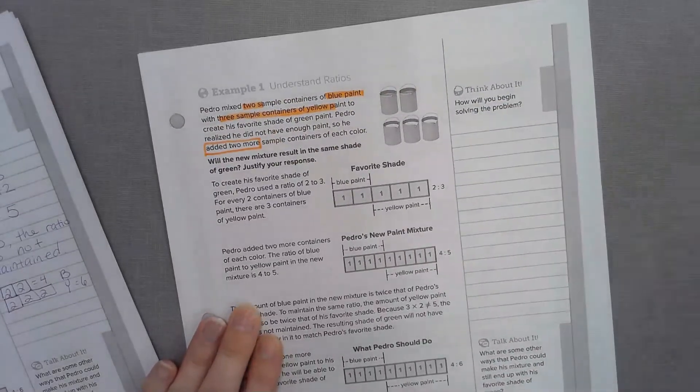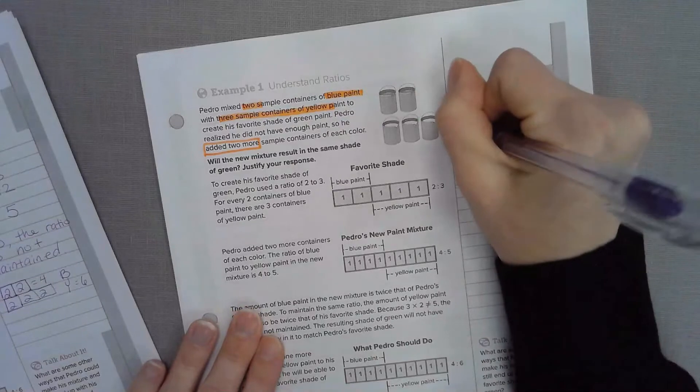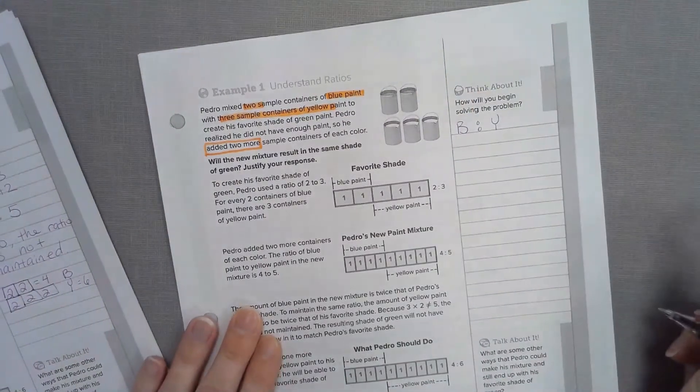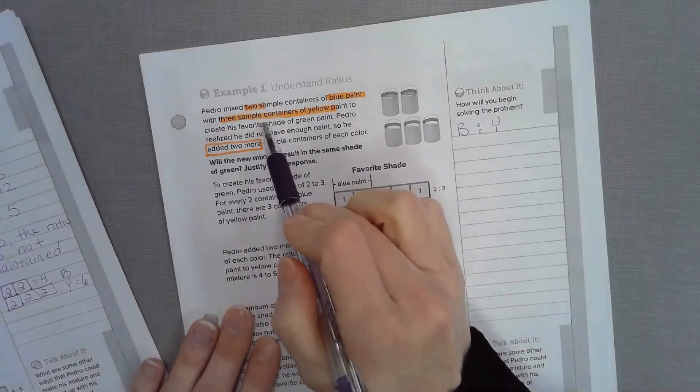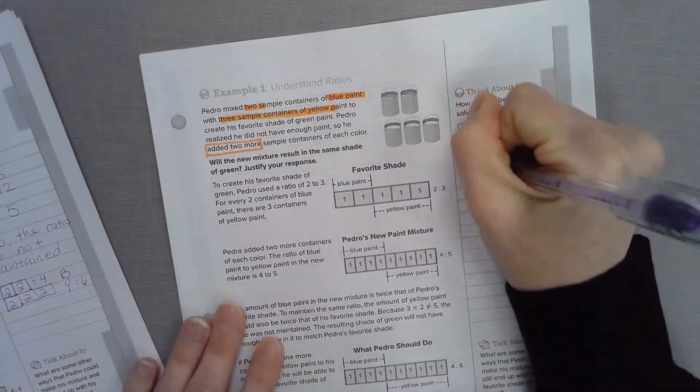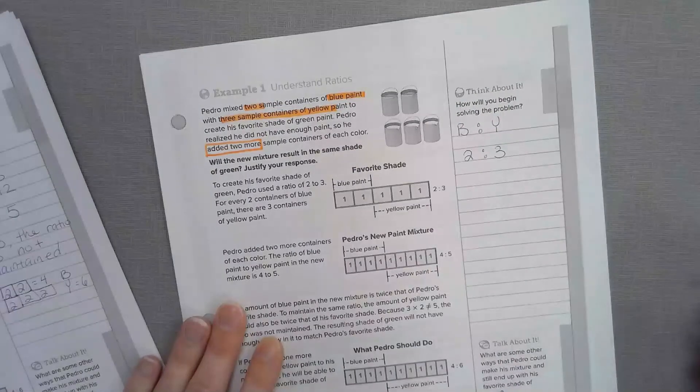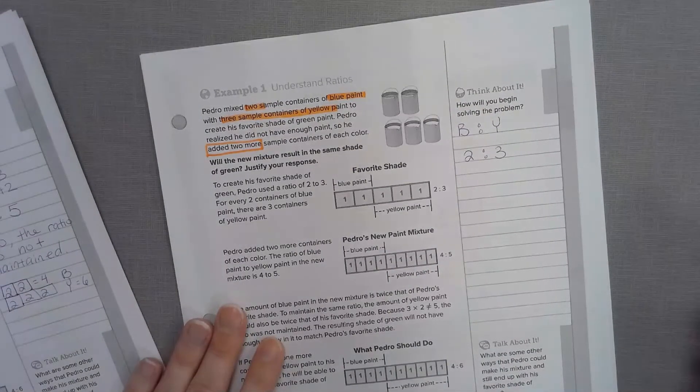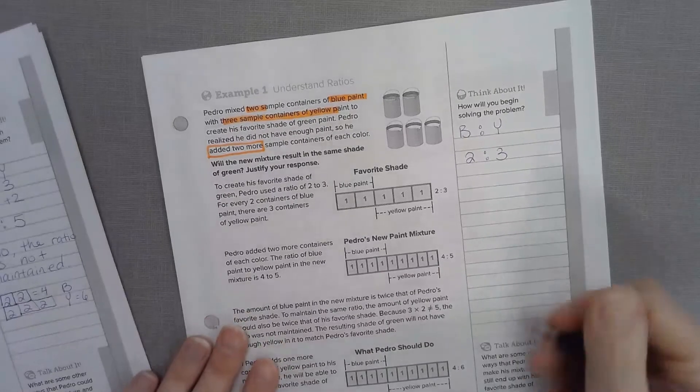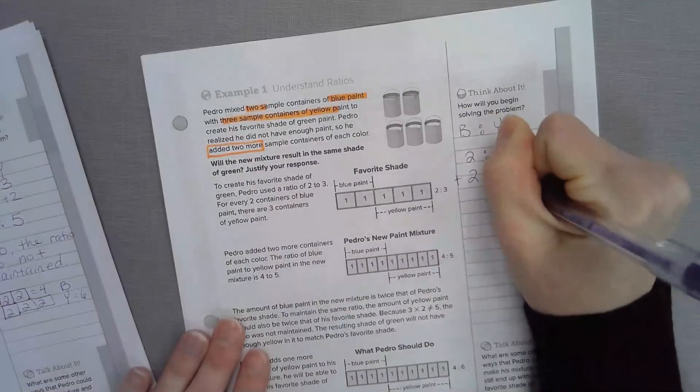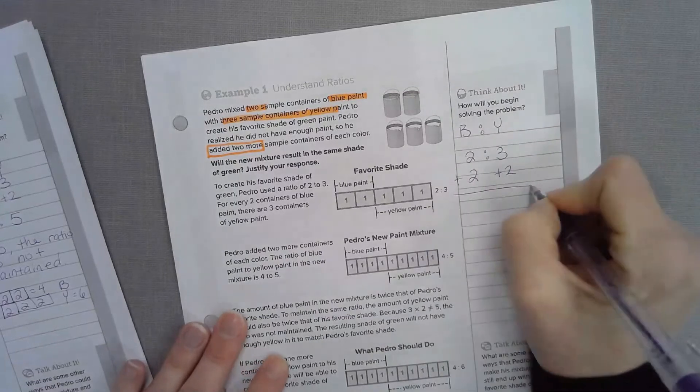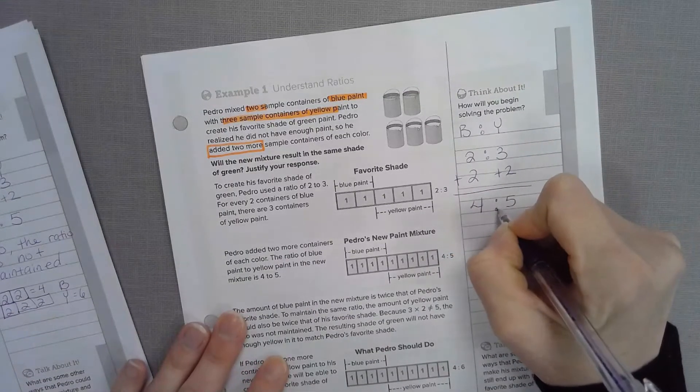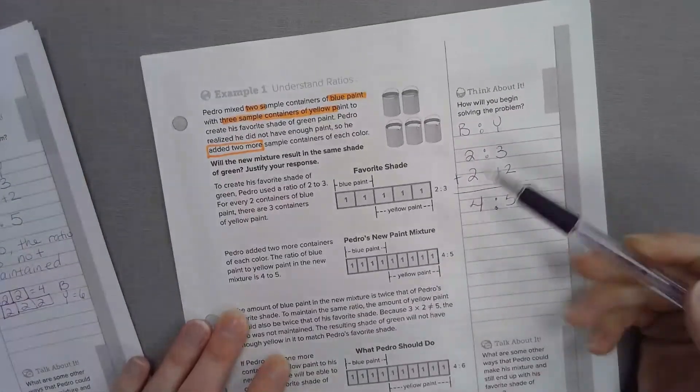Let's justify your answer. It says how will you begin solving your problem? Let's first start with our labels. We're comparing blue paint to yellow, so B to Y, and then they gave us the ratio 2 to 3. We have to justify he added 2 more sample containers of each one. Did he balance the ratio?